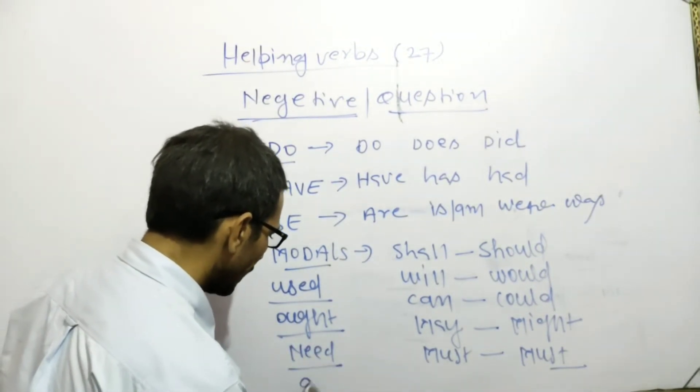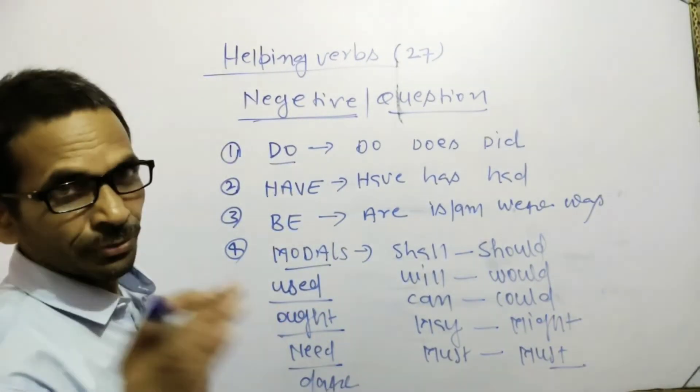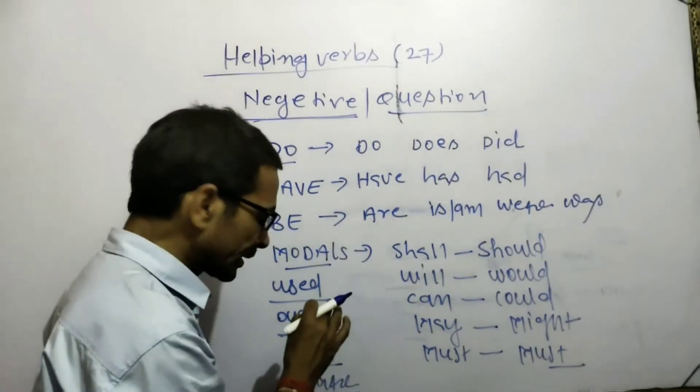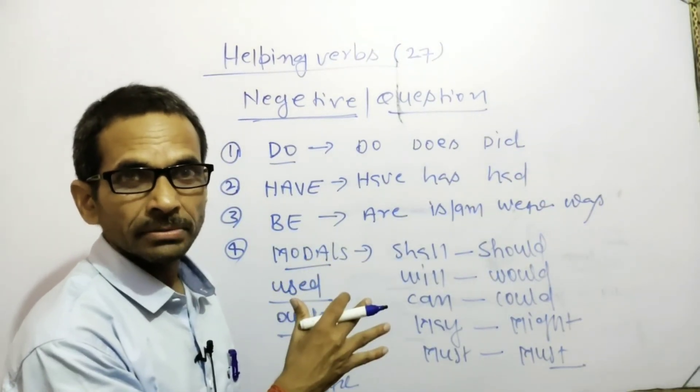First, you have to be clear about the 27 forms of helping verbs.